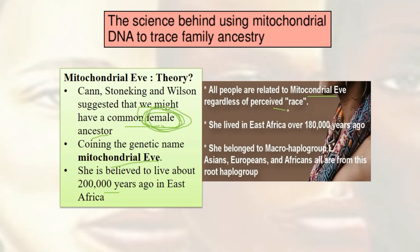Mitochondrial Eve belonged to a macro-haplogroup L. We'll be looking at what a haplogroup is. It is believed that Asians, Europeans, and Africans all have this as the root haplogroup.